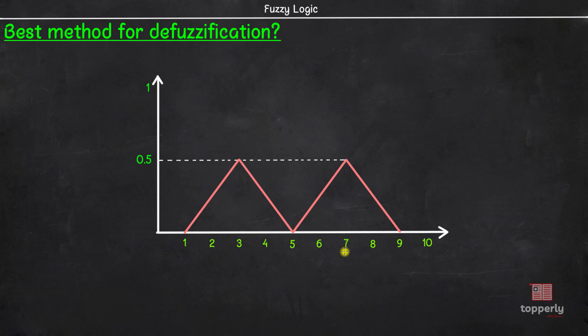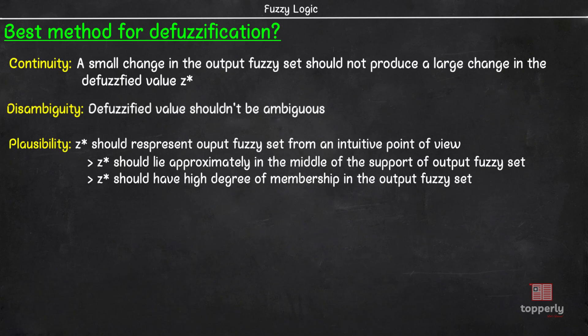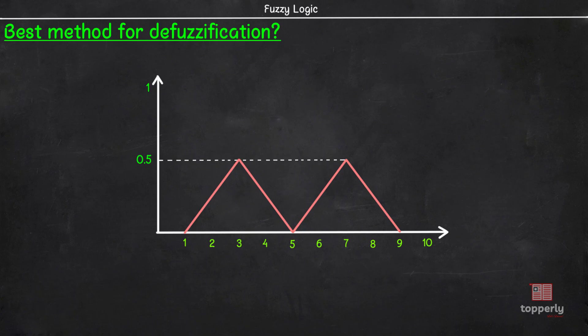Similarly, the center of largest area method is also not applicable here as both the convex subregions have the same area. The third criterion for selection of a defuzzification method is plausibility. For z* to be plausible, it should lie approximately in the middle of the support of the output fuzzy set and also should have a high degree of membership in the output fuzzy set. If we take the same example and use the centroid method, even though z* lies in the middle, its membership value is 0, so the centroid method is not plausible here.